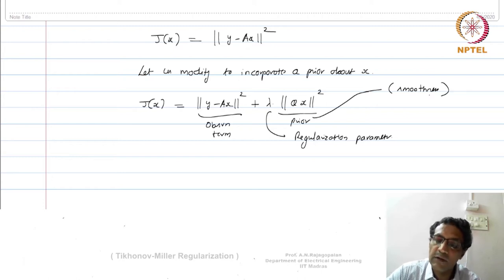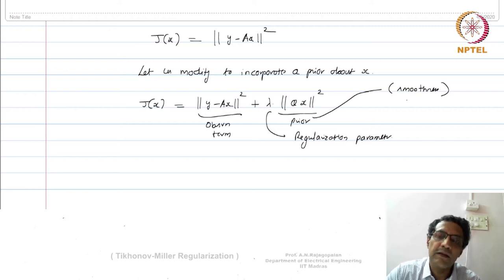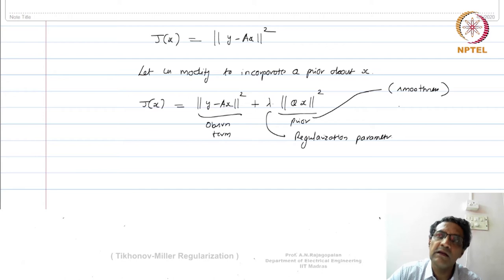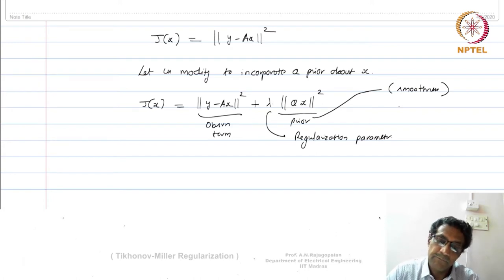What does smoothness mean? That means locally intensities do not change rapidly — locally intensities ought to look somewhat similar. This is called a Markovian prior, which is a very generic thing. Any kind of natural image you see around you, you will find that the intensity within a local region will look similar; they are expected to look similar.